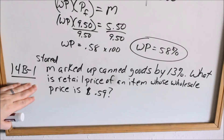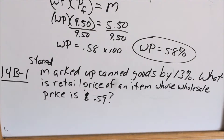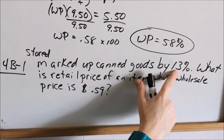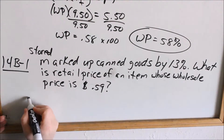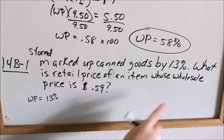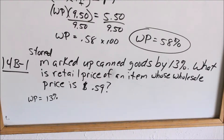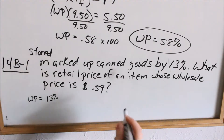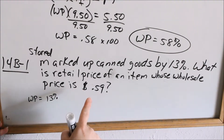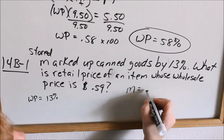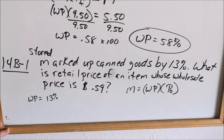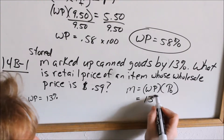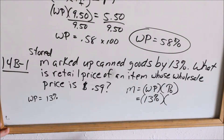Now let's look at 14B1. A grocery store marked up their canned goods by 13% — that's our percentage, our WP. What is the retail price of an item whose wholesale price is $0.59? We're asked for the retail price. The markup formula is: M equals WP times P_O, the original price. Our percentage is 13% and our original price is $0.59.